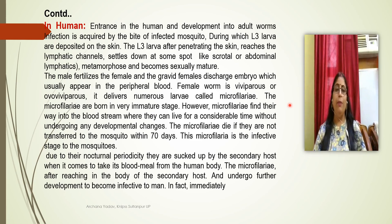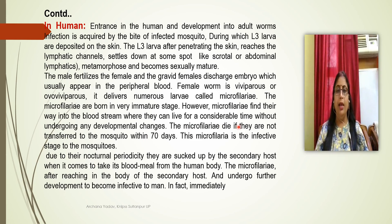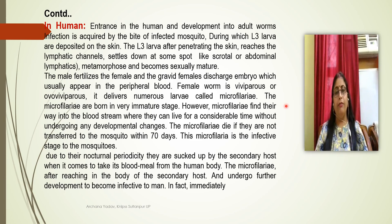The female worm is viviparous or ovoviviparous, delivering numerous larvae known as microfilariae, which represent the immature stage. Microfilariae find their way into the bloodstream where they survive approximately 70 days. If no mosquito contacts the human, they die. Due to nocturnal periodicity, the mosquito (secondary host) takes a blood meal from the human, ingesting microfilariae, which then undergo further development inside the mosquito to become infective to man.